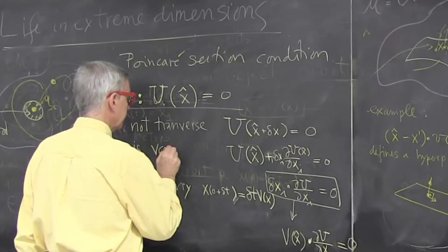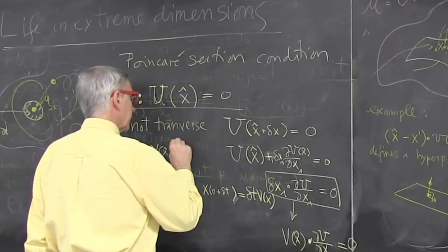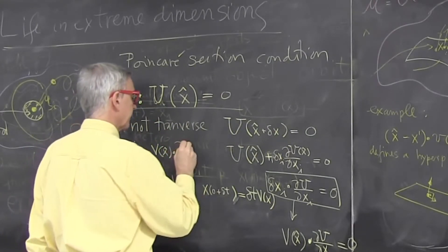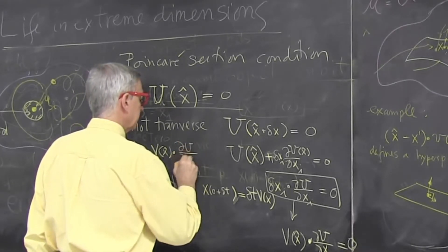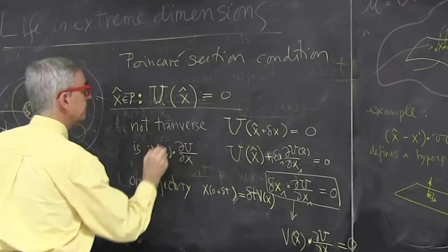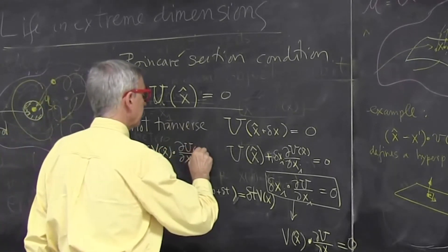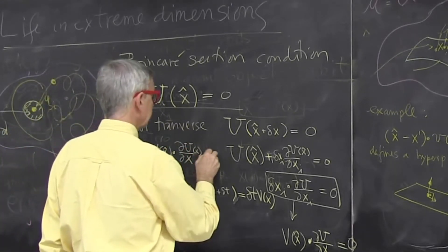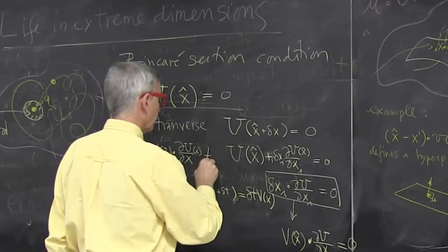So condition for being not transverse is I am at a point on Poincaré section. I just look at my law of nature, what is my derivative in time? That vector field is given to me. That's how I started the whole story.